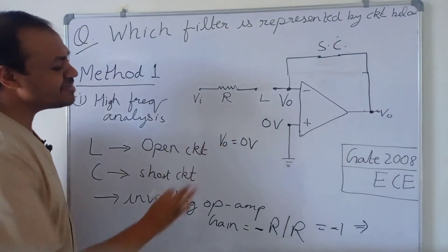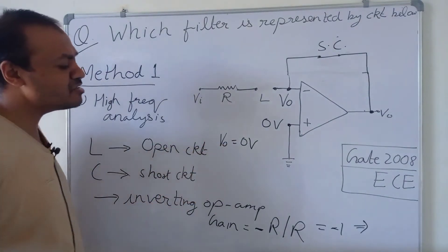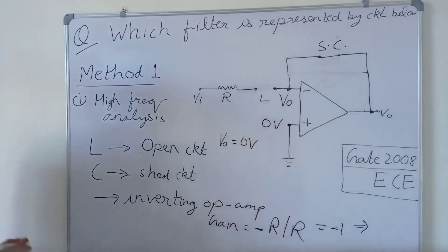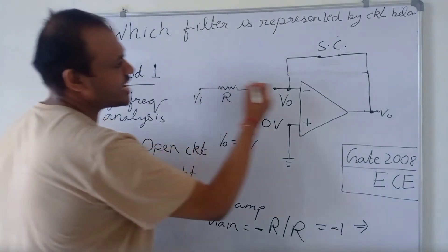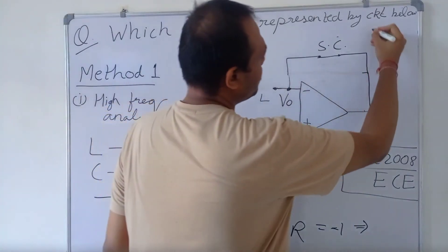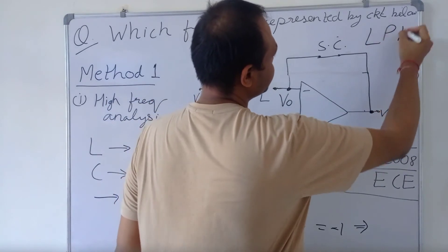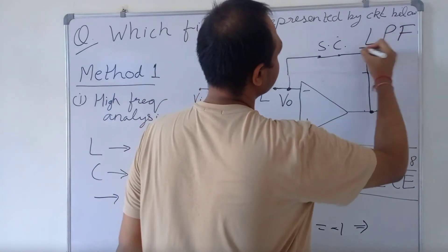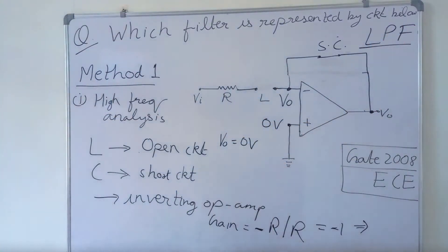At high frequency, V₀ is equal to 0 volt, and at low frequency, V₀ is equal to minus Vᵢₙ. So this is actually a low pass filter. By using Method 1, we have found out that this is a low pass filter.